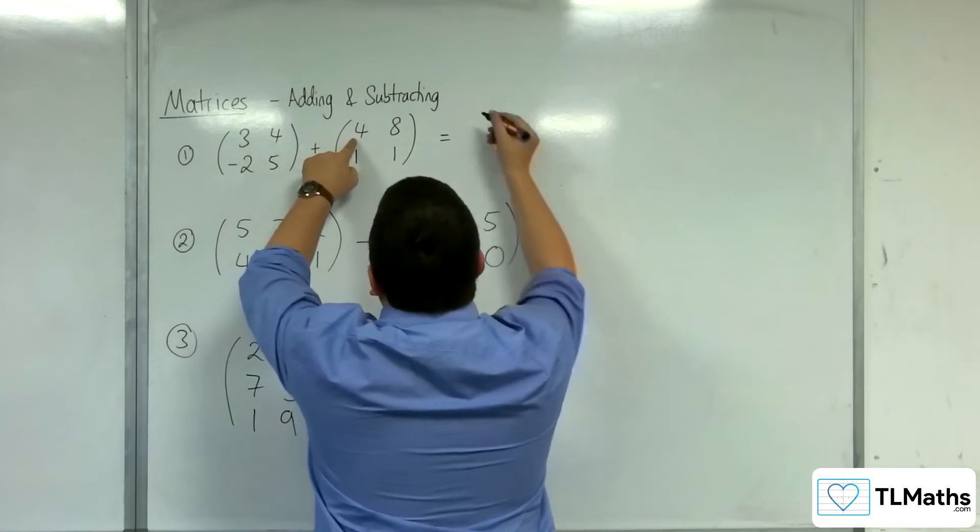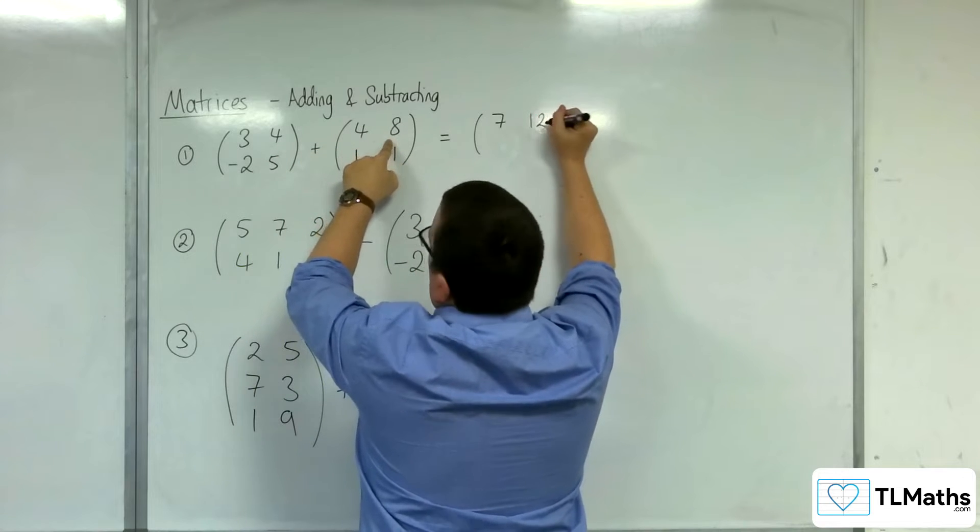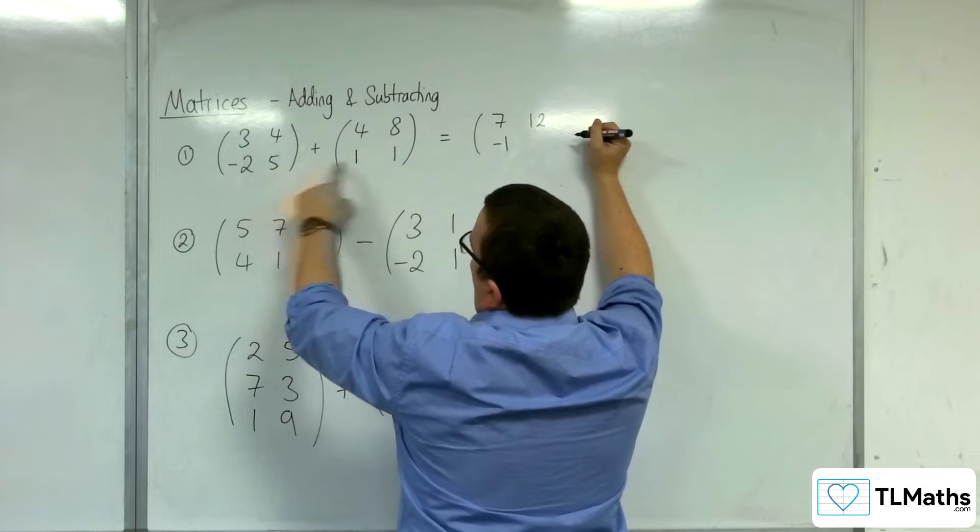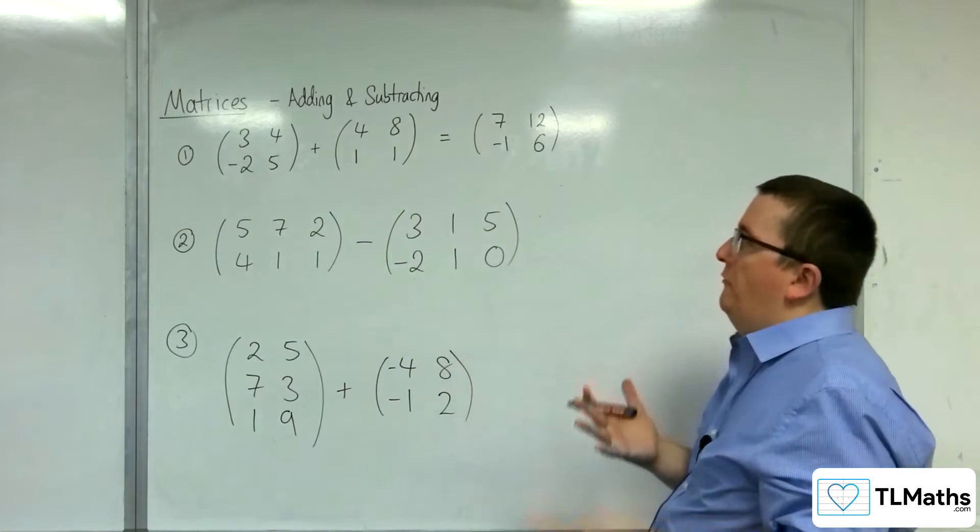So we would have 3 plus 4 is 7, 4 plus 8 is 12, minus 2 plus 1 is negative 1, 5 plus 1 is 6. So it's as straightforward as that.